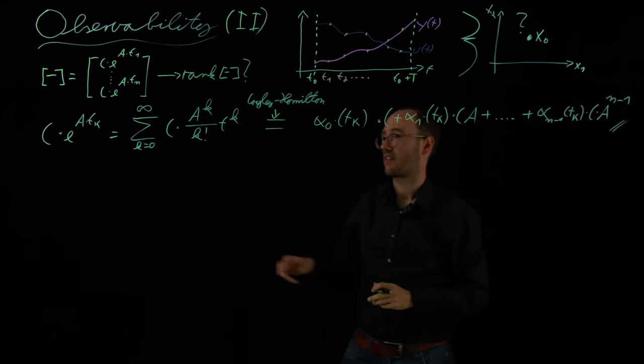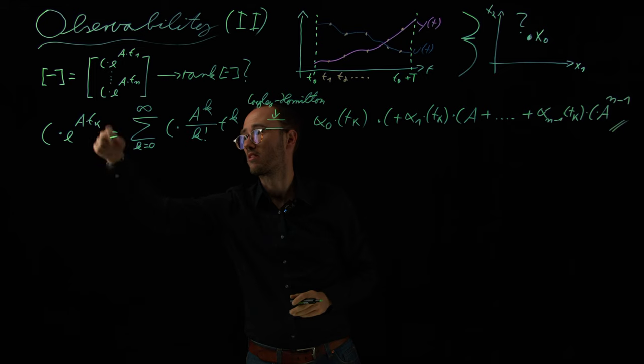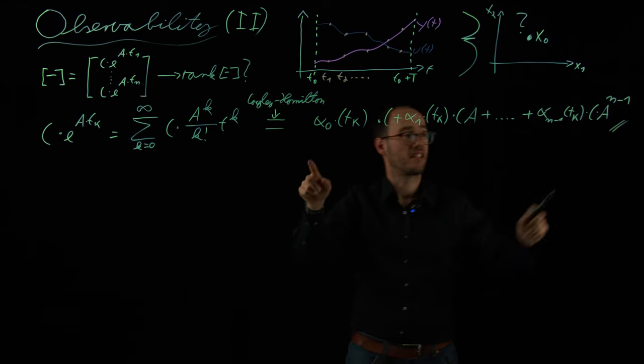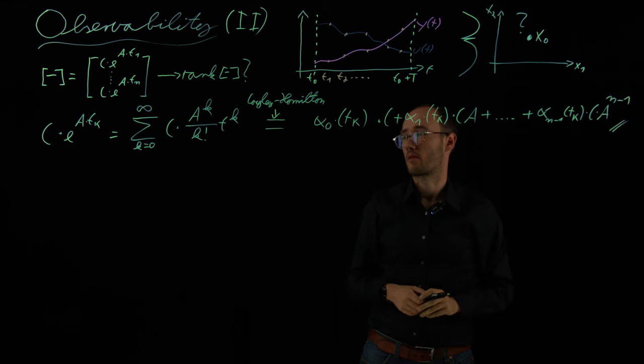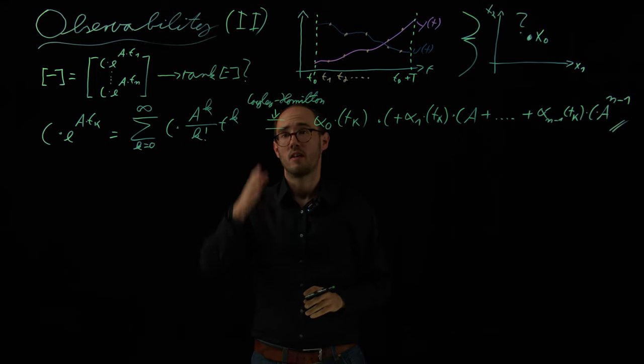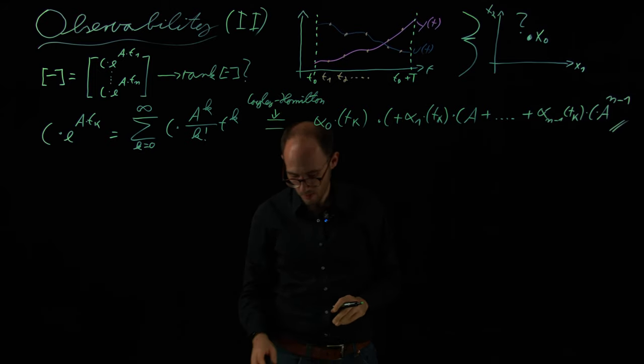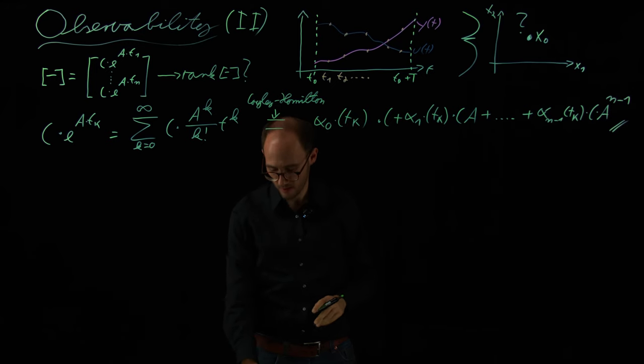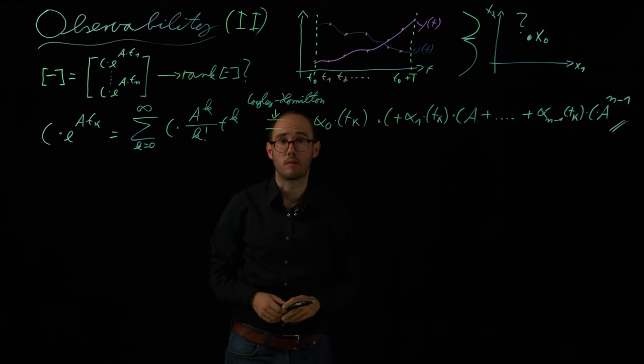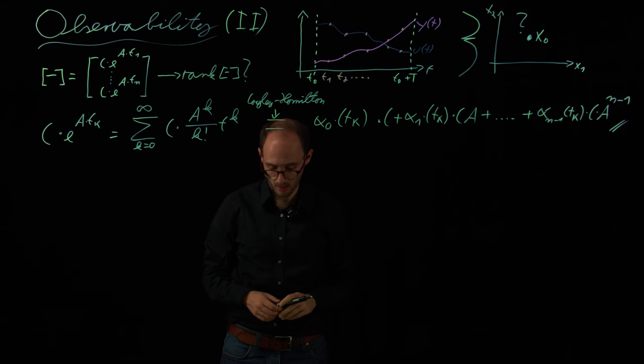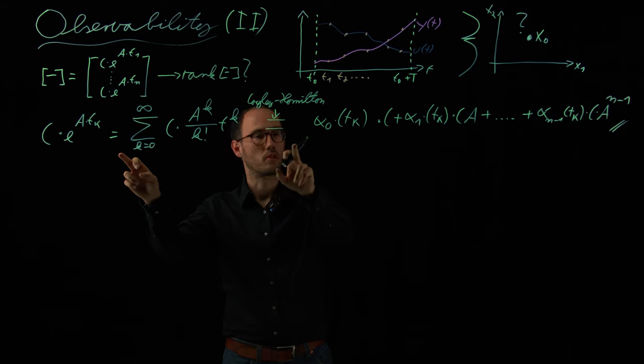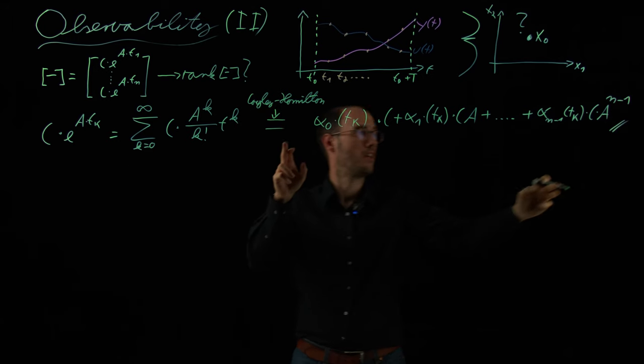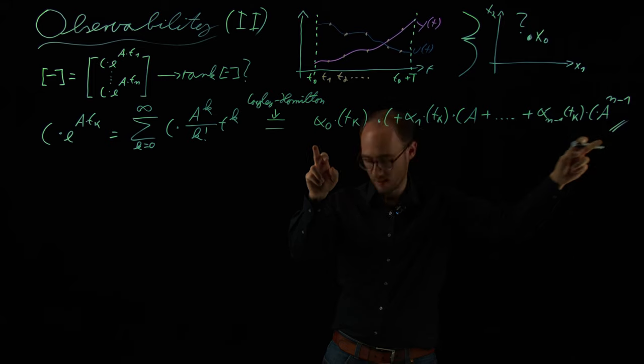In short, the Cayley-Hamilton theorem basically says that any matrix, so this here on the right-hand side is basically just a big matrix, must satisfy its own characteristic polynomial, and this right-hand side expression here is a representation of the characteristic polynomial of A. If you do not know what the Cayley-Hamilton theorem is, please go ahead and find it out. It's normally very easily findable in linear algebra lecture books. What I can do with the Cayley-Hamilton theorem and by this rewriting of this infinite series by a finite series expression out of n terms,